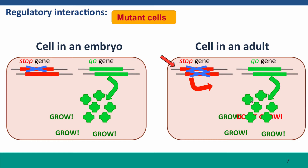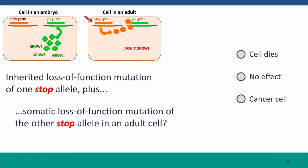We'll see how this plays out in inheritance of cancer risk a couple of lectures from now. Here's another version of this question: what if there's an inherited loss-of-function mutation of one stop allele, plus a somatic loss-of-function mutation of the other stop allele in an adult cell? What's going to happen?